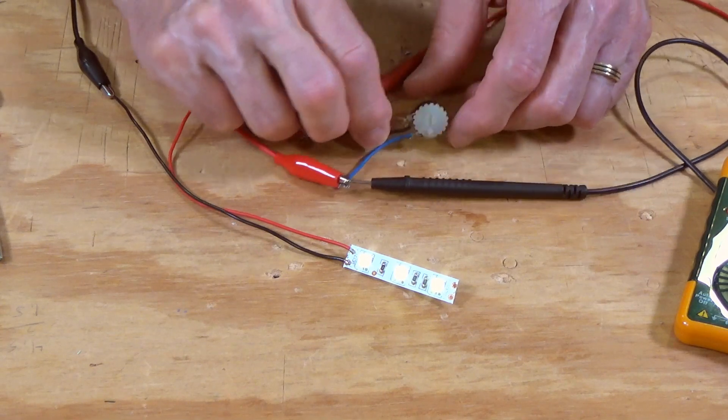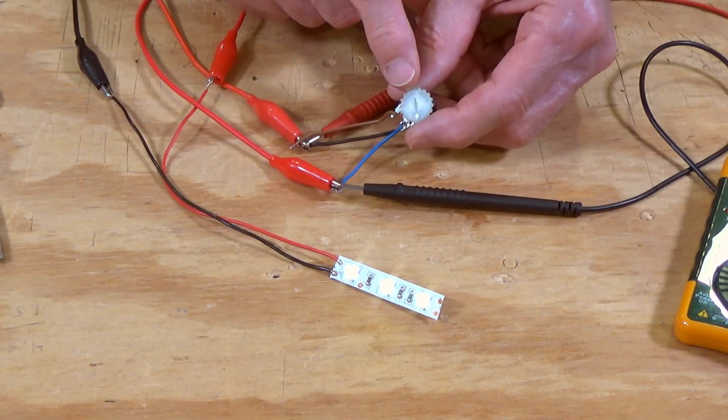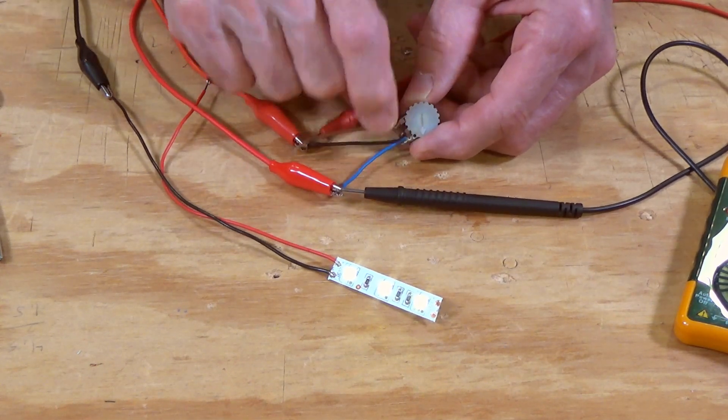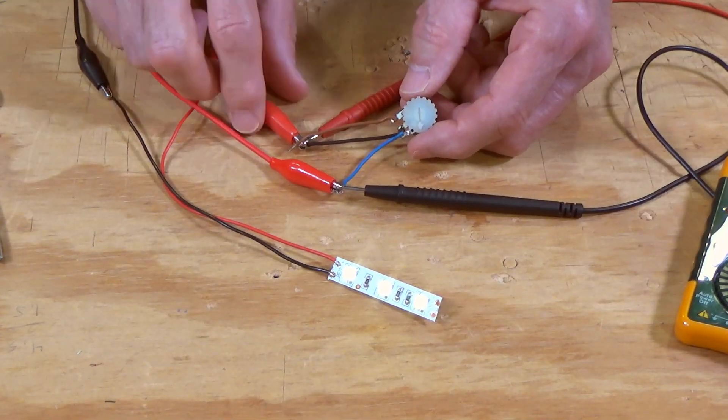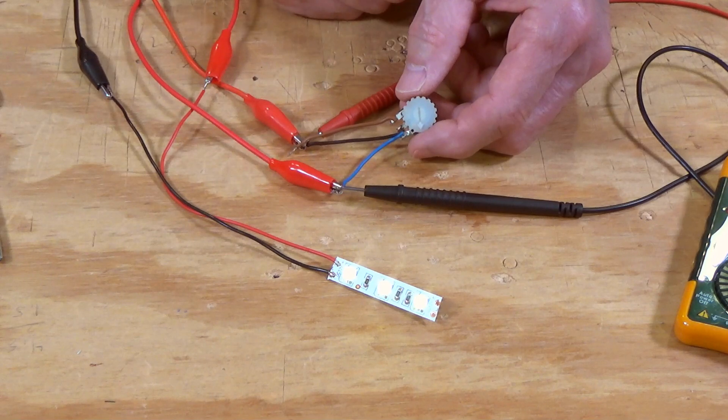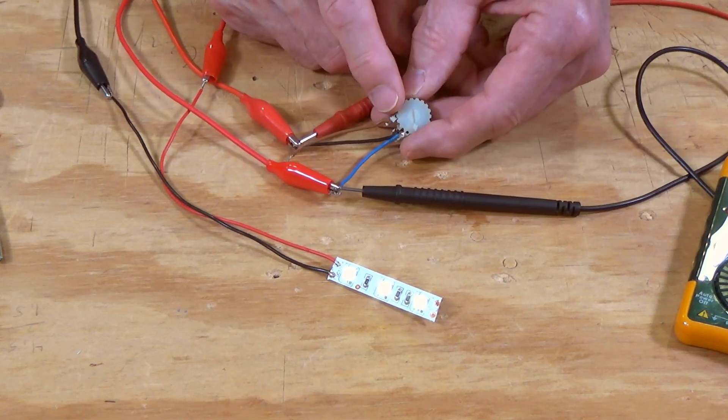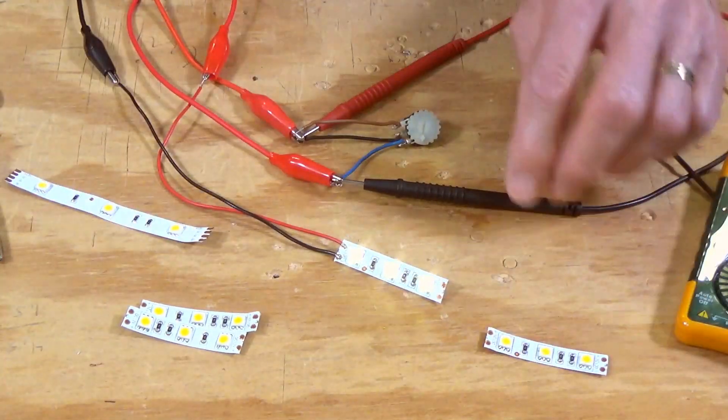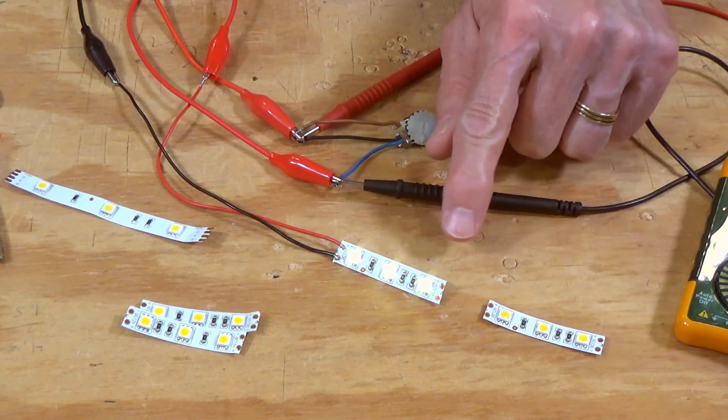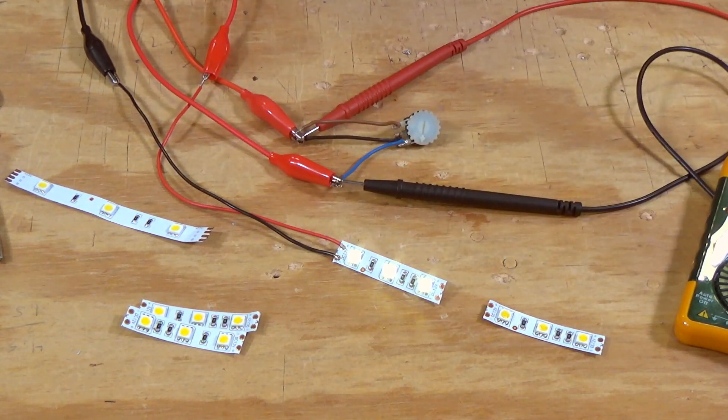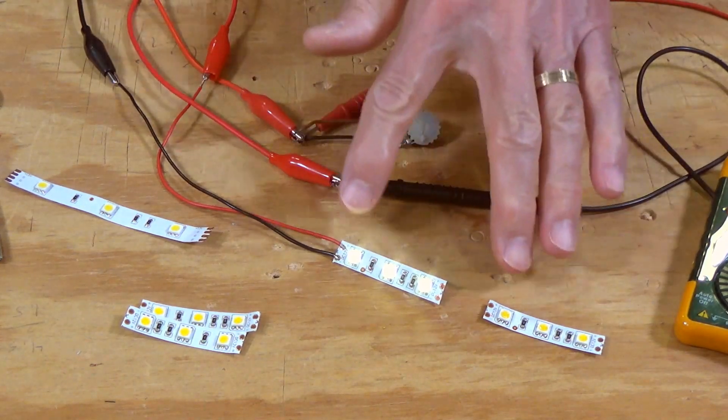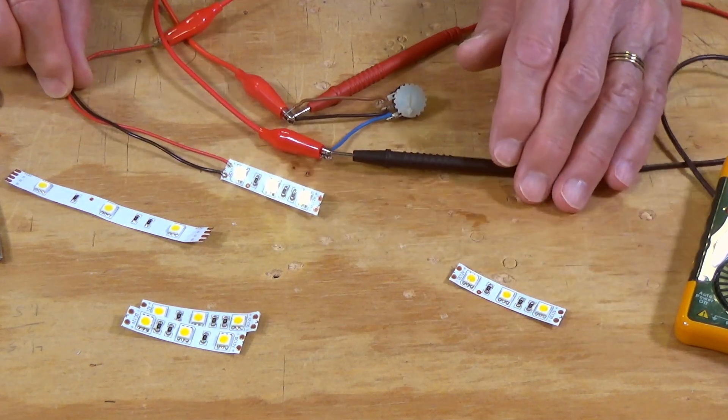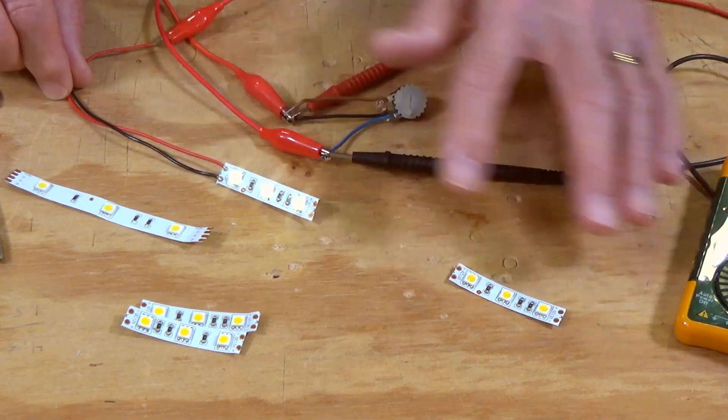One other thing you can do is buy a bunch of these little trim pots and use those instead of a resistor. Then you'll be able to change the intensity of the light in the future if you want it brighter or dimmer. It's fairly straightforward. You can use multiples, wire these together as long as you observe the correct polarities, and create individual sections a few inches apart.